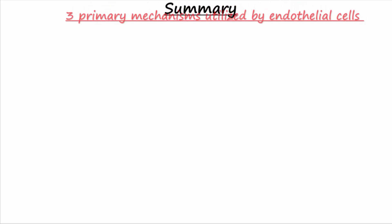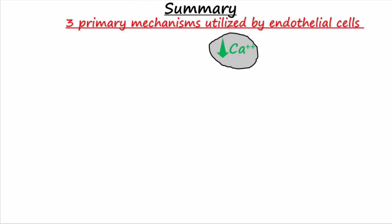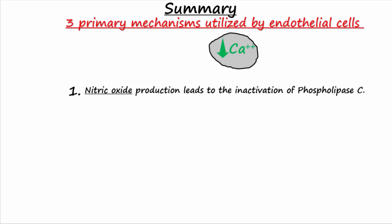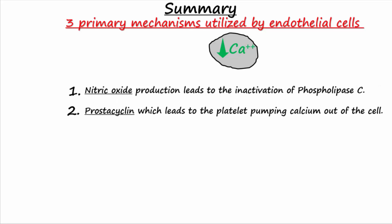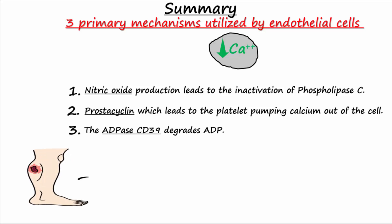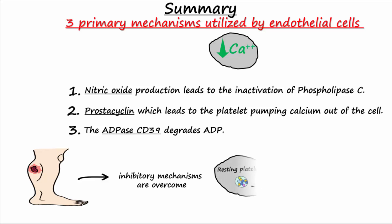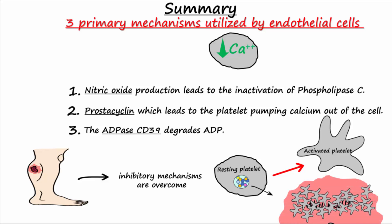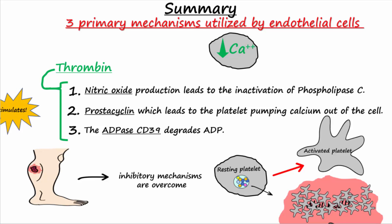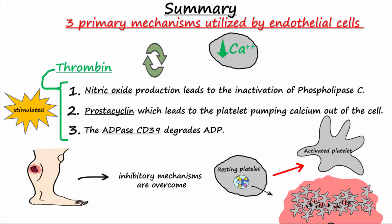To summarize, three mechanisms that lower calcium, employed by endothelial cells, act to inhibit platelet activation. First, endothelial cells produce nitric oxide that leads to the inactivation of phospholipase C. Second, endothelial cells produce prostacycline, which leads to the platelet pumping calcium out of the cell. And third, the ADPase CD39 degrades ADP. Following injury, these inhibitory mechanisms are overcome, resulting in platelet granule release and the initiation of platelet plug formation to help stop bleeding. It is also interesting to note that one of the most potent stimulators of endothelial cell production of nitric oxide, ADP, and prostacycline is thrombin, an important protein from the coagulation cascade. Thrombin thus becomes an integral part of a negative feedback loop that helps regulate the positive feedback initiated during clotting.